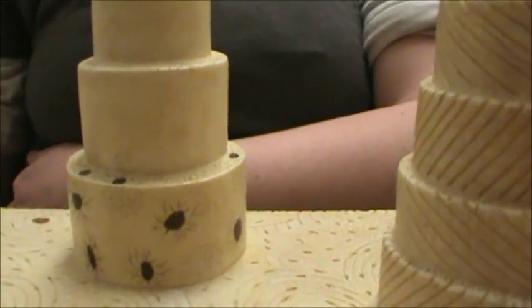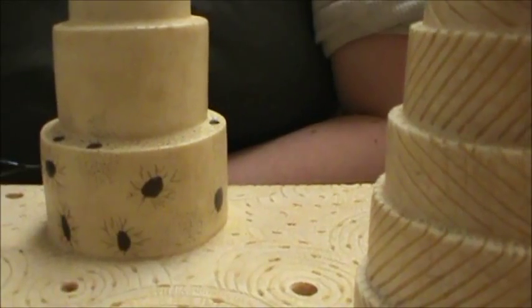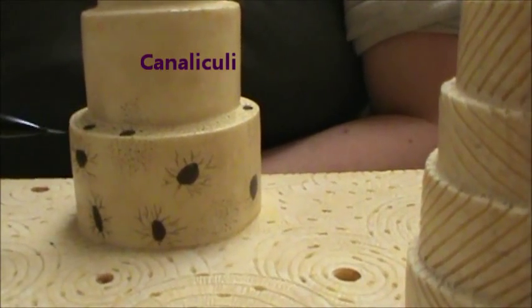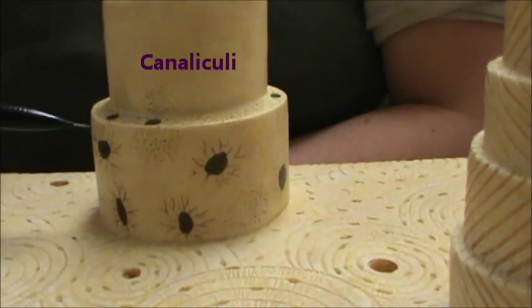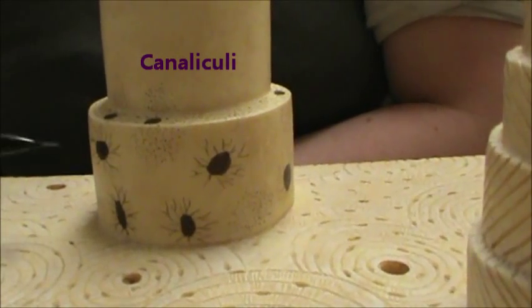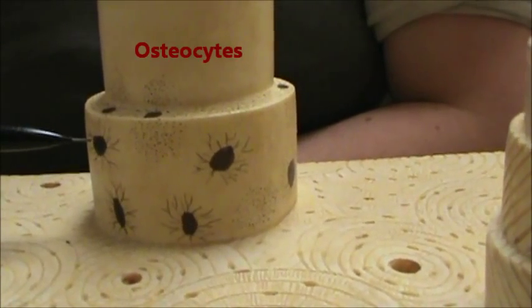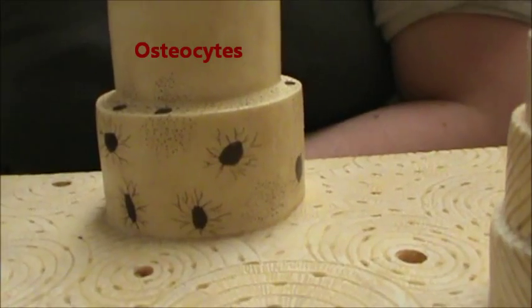And then we have what looks like spiders, and the legs of the spiders are going to be canaliculi, and the black part, the bug looking part, is going to be osteocytes.